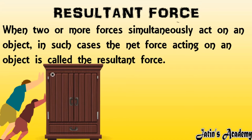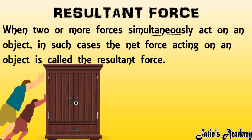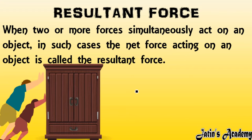Next we have resultant force. For example, one person alone cannot move a very heavy almirah, so a second person is called to help. When two or more forces act simultaneously on an object, the total force exerted is called the resultant force. If both persons push from the same direction, their forces add up — for example, 5 newtons plus 4 newtons equals 9 newtons.